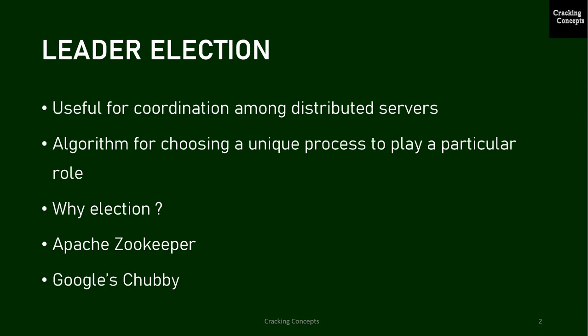To begin with, we will start with leader election. A leader is useful for coordination among distributed servers. An algorithm for choosing a unique process to play a particular role is called an election algorithm. For example, consider bank accounts whose details are replicated across a few servers. Among these, one server will be responsible for all reading and writing into the data, and that will be called the leader among all these replicas.